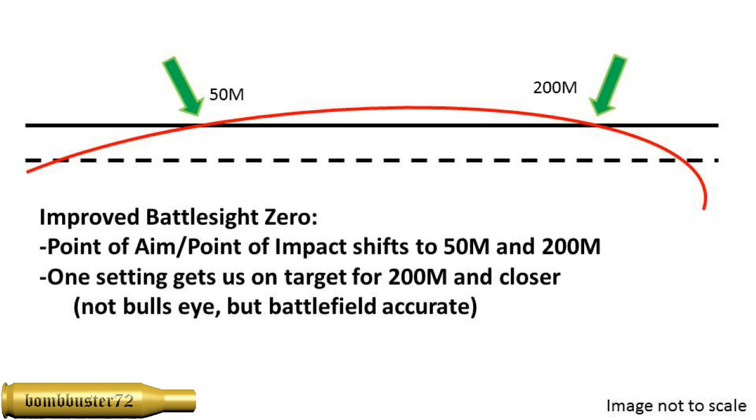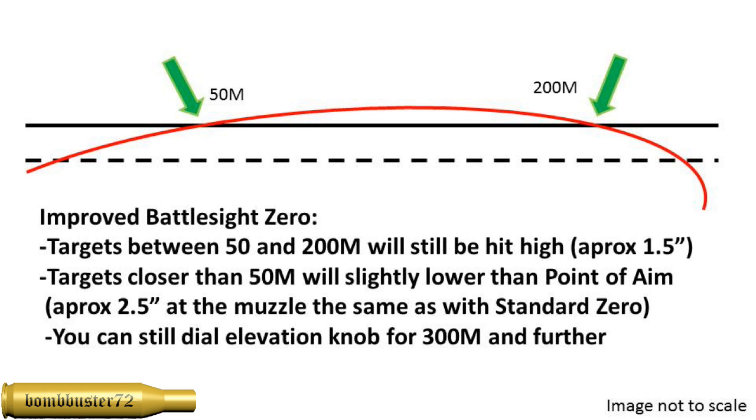This setting gives us one place, one setting that we can use for any target that is 200 meters and closer. Now this isn't going to be bullseye accurate, and if you're looking for a target weapon, this is not the sighting system you want to use. Targets between 50 and 200 meters, you're still going to hit them high, but this is a lot better. We're talking about approximately an inch and a half, maybe two inches, that you're going to hit high. Very acceptable in a combat situation.